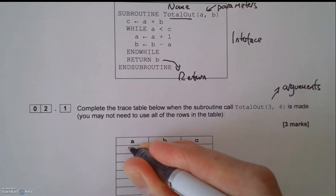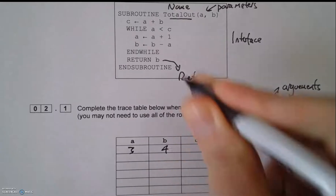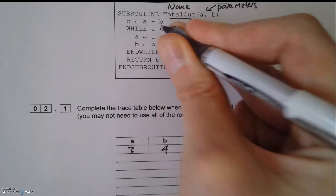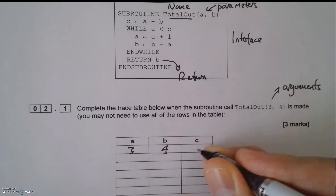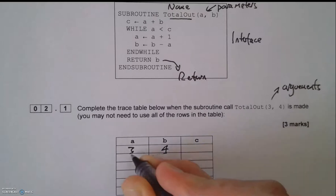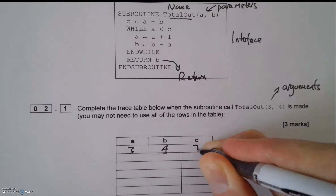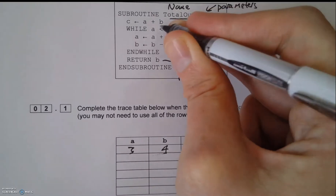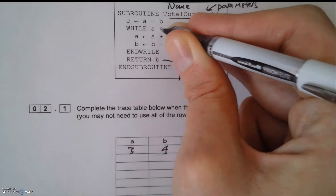Right, let's start. Put in a and b first — that's going to be 3 and 4. Then c equals a plus b, so I need to add those together: 3 plus 4 equals 7. Then I go into the while loop.